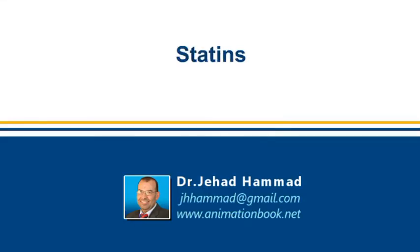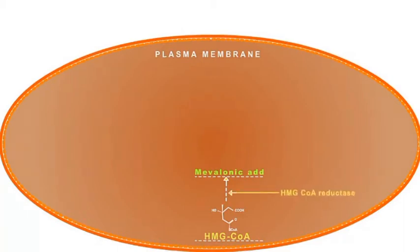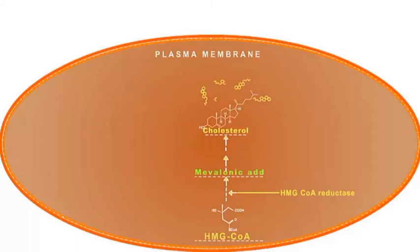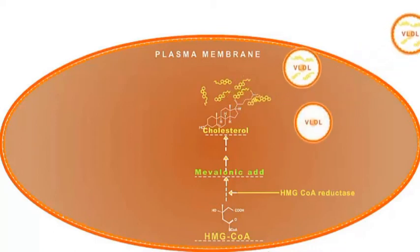Statins. Cholesterol synthesis starts with the conversion of HMG-CoA into mevalonic acid. This rate-limiting step is catalyzed by the HMG-CoA reductase enzyme. Mevalonic acid is then converted to cholesterol in a series of intermediate reactions. The newly synthesized cholesterol is packed in VLDL particles and released by the cell.